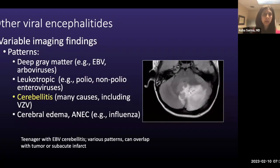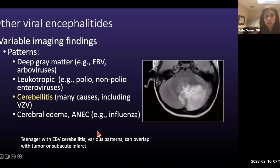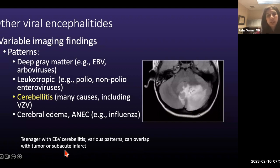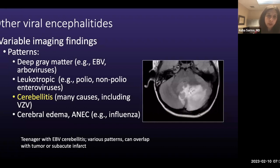Cerebellitis — many viruses can cause it, as can non-viral entities. Varicella zoster virus is one of the more common ones; Epstein-Barr virus cerebellitis is also common. Various patterns exist, and it's important to note these can overlap with tumor or subacute infarcts. We had a recent case of pseudotumoral hemicerebellitis where the underlying cause was never found — diagnosis was ultimately made by follow-up after steroids, when imaging findings had improved and there was volume loss in that area of the cerebellum.